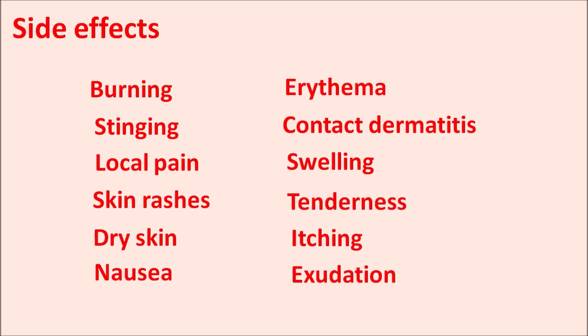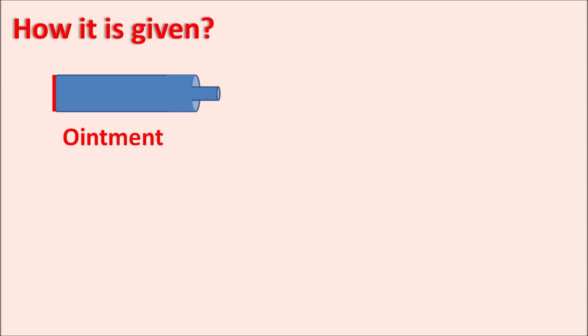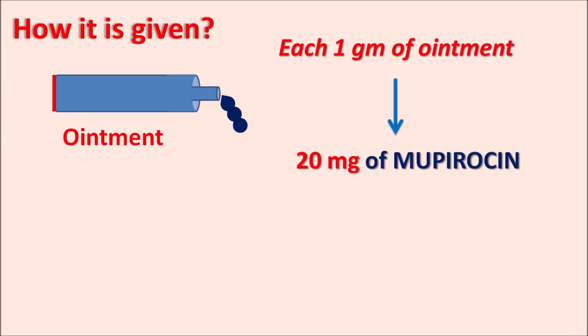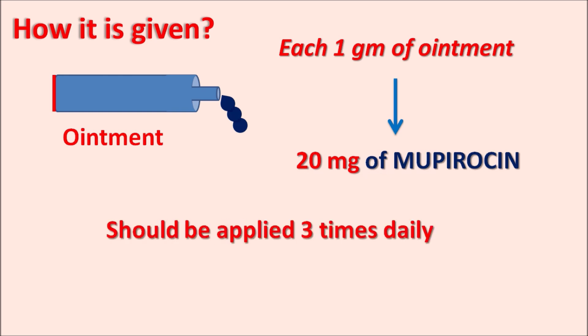Other side effects include erythema (reddening of the skin), contact dermatitis, swelling, tenderness, itching, and exudation. This drug is available as ointment and cream. Each gram of the ointment contains 20 mg of mupirocin. A small amount should be applied three times daily, and treatment can be extended up to 10 days based on efficacy.